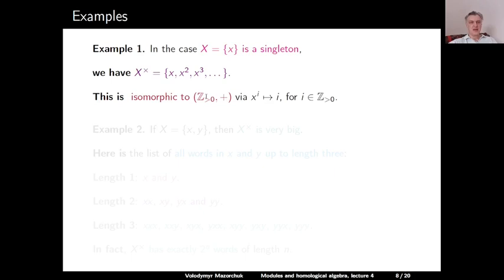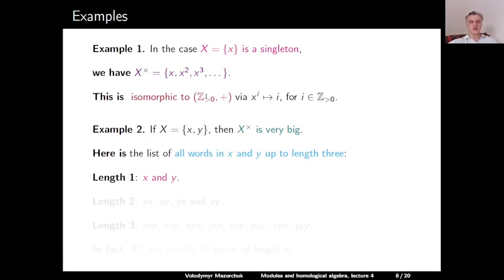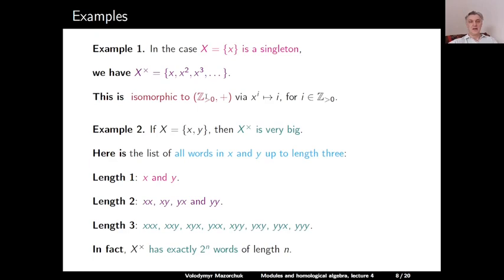Example 2: consider the alphabet consisting of two letters x and y. Then the semigroup of all words in this alphabet is very big. There are two words of length 1 (x and y), four words of length 2 (xx, xy, yx, yy), and eight words of length 3 (xxx, xxy, xyx, yxx, xyy, yxy, yyx, yyy). In general, X⁺ has exactly 2ⁿ words of length n, so the number of words of fixed length grows exponentially. This is a very big infinite semigroup.